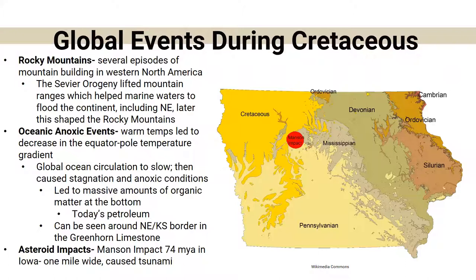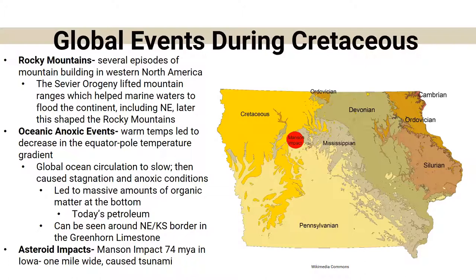Something major that happened was the Manson impact — an asteroid that hit in what is now Iowa. It was about a mile wide and caused a tsunami because water was covering that area. We know this not only from the impact itself but also from evidence we can see within the rock.